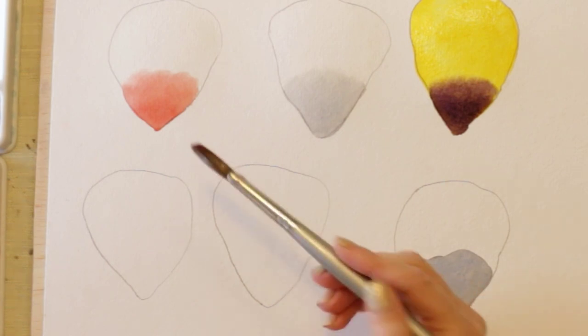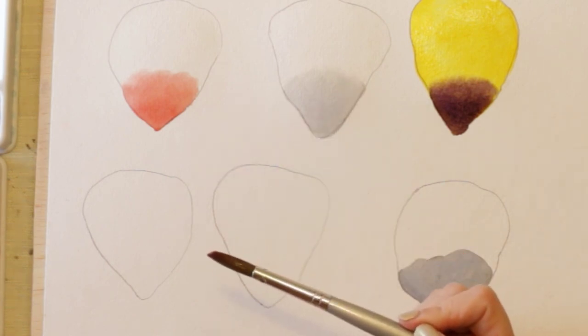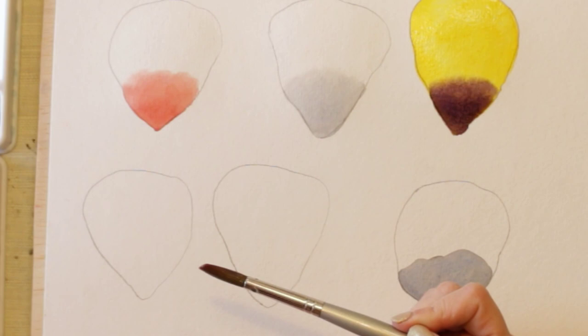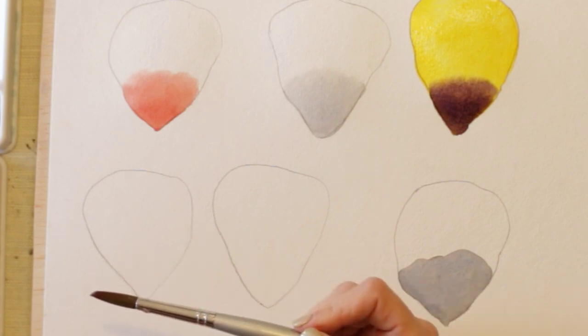So this method here is the method I want you to default to most of the time. Now what happens if you forget to pre-wet the paper and you start applying the paint and you think, oh crikey, I wanted to blend that edge out. That's what we're going to look at next.